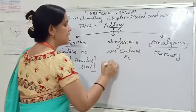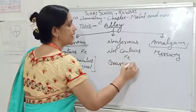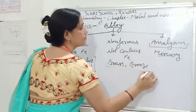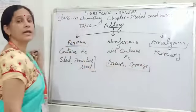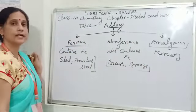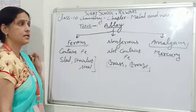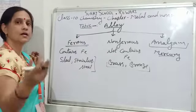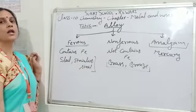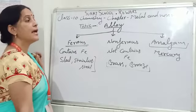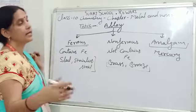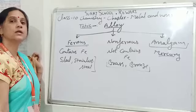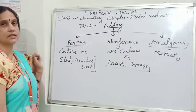Non-ferrous alloys are brass and bronze. These don't have iron as their constituent elements. And amalgam is the mercury-mixed alloy — that means any metal or non-metal mixed with mercury is amalgam, like sodium amalgam, silver amalgam, etc.